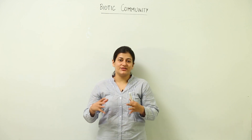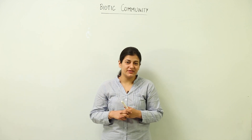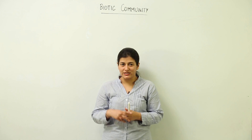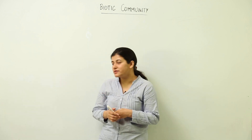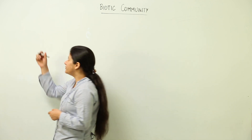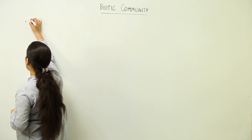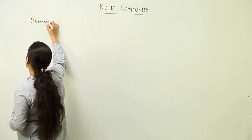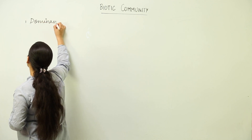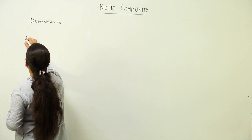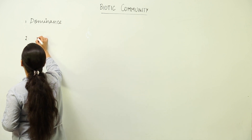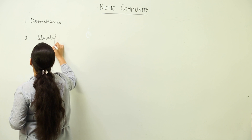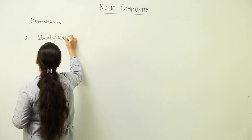Let us talk about two terms which are of great importance in a biotic community. Those two terms are dominance and stratification. We have to talk about an ecosystem in terms of biotic community.